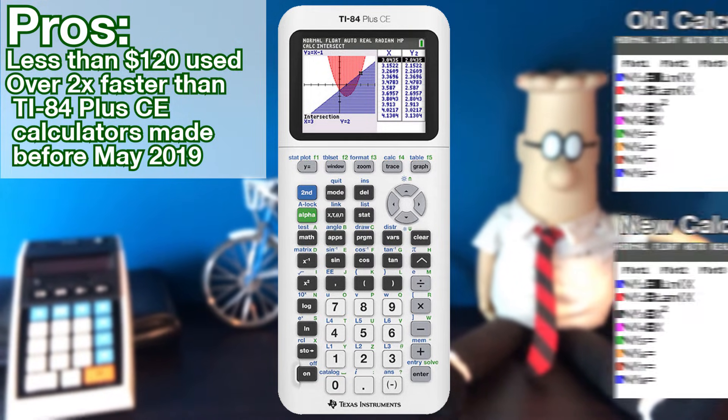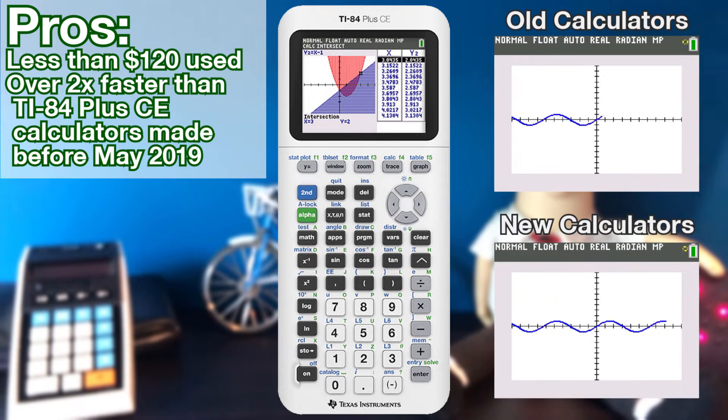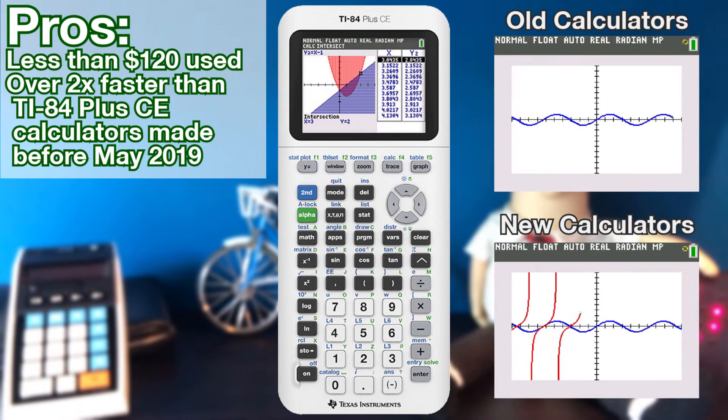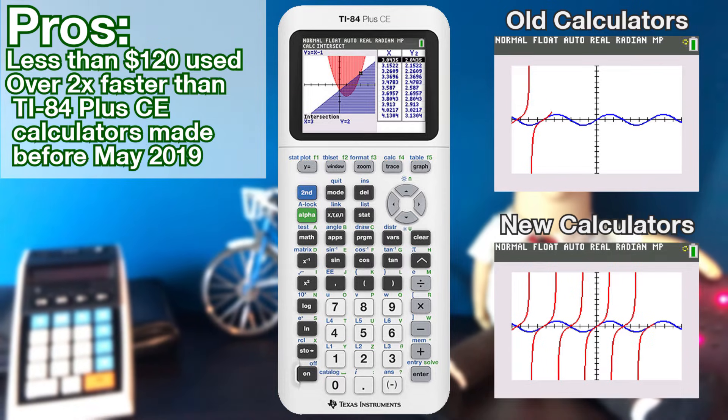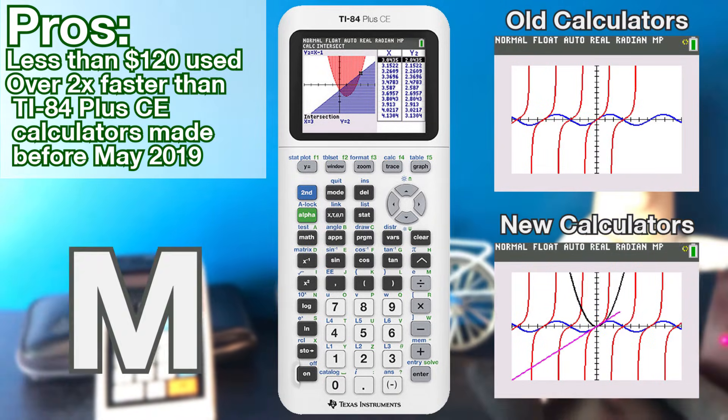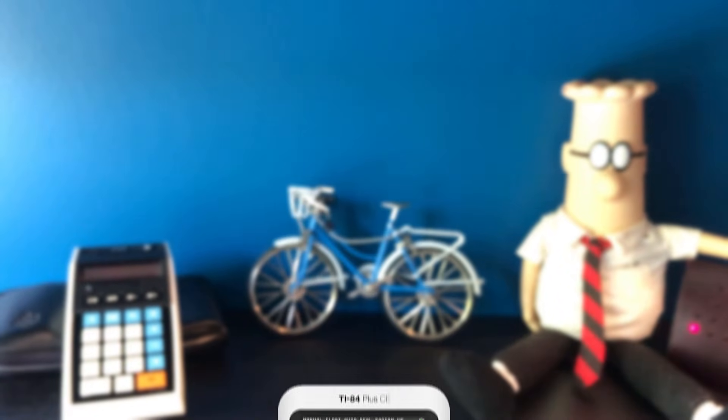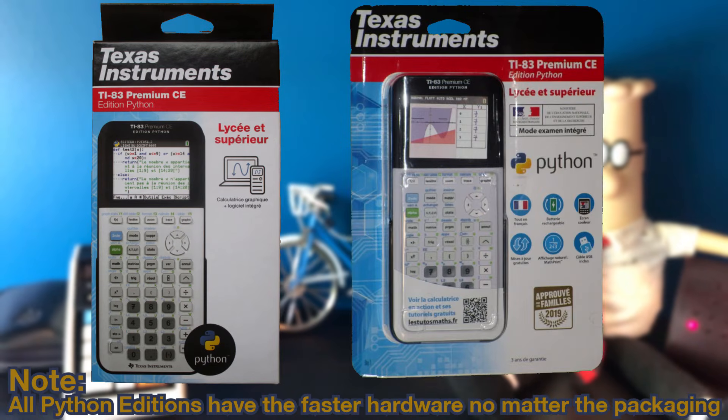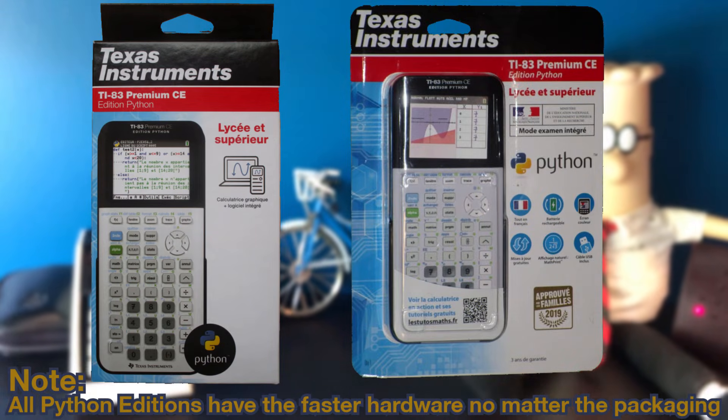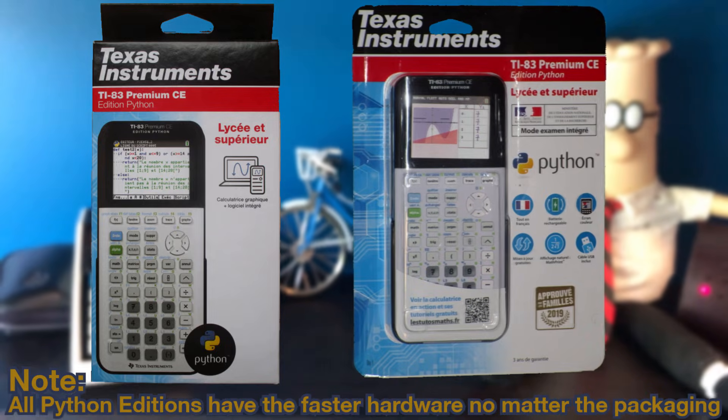This means you can shave off precious time with each calculation during test, and it's especially useful with graphing. You can tell if a calculator is going to have the faster hardware by looking on the back of it and seeing if the last letter on the date code is M or later. You can also tell if it's going to have the faster hardware just by checking if it's in a cardboard box or plastic packaging. A cardboard box is guaranteed to have the faster hardware, while the plastic packaging may not have it.